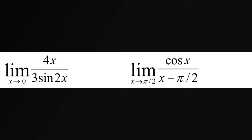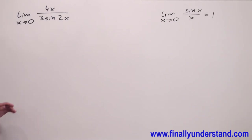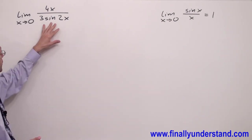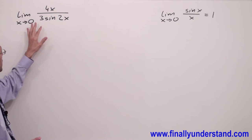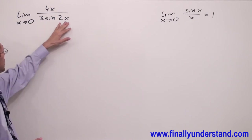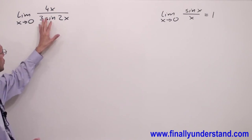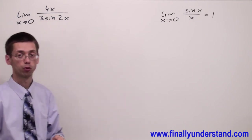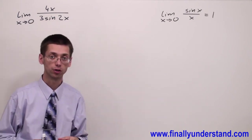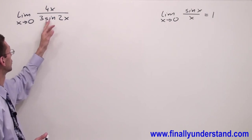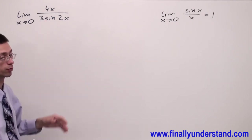Let's take a look at this example. We're supposed to start solving this problem by looking at the denominator. If x is going to approach 0, my denominator is going to approach 0, because sin is equal to 0 and 0 times 3 gives me 0.